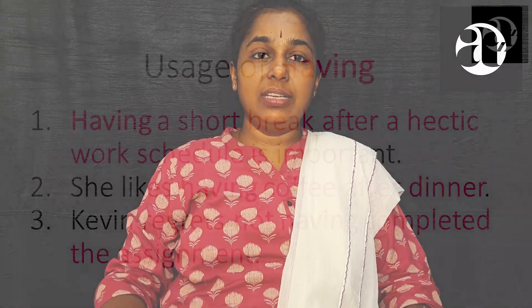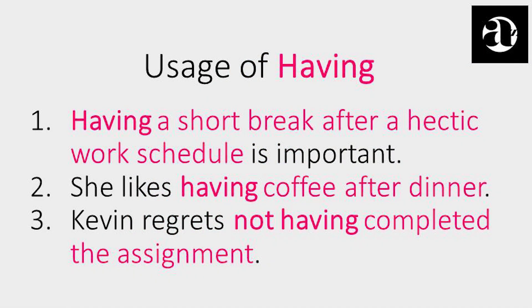Moving forward to the usage of having. Having is the present participle form of the verb 'to have' and is used in different ways. It is often used as the gerund, which refers to a verb that functions as a noun, such as the subject or object of a sentence. For example: Having a short break after a hectic work schedule is important. She likes having coffee after dinner. Kevin regrets not having completed the assignment. In these sentences, having functions as a noun — as the subject or object of the sentence.